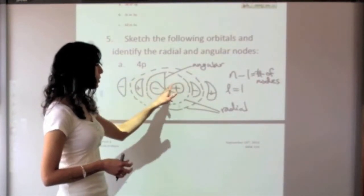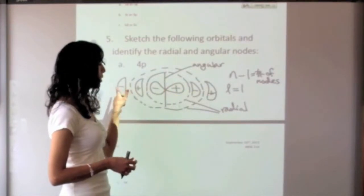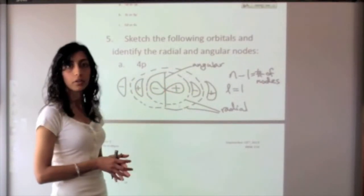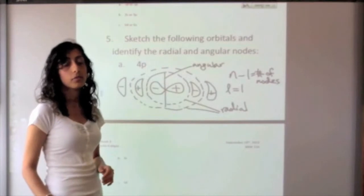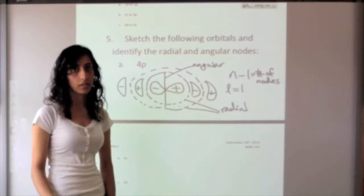That was a 2p orbital right there, three and four - two radial nodes and one angular node. I hope this made sense. If you still have questions, feel free to stop by my office hours and I can explain it to you again. Thank you.